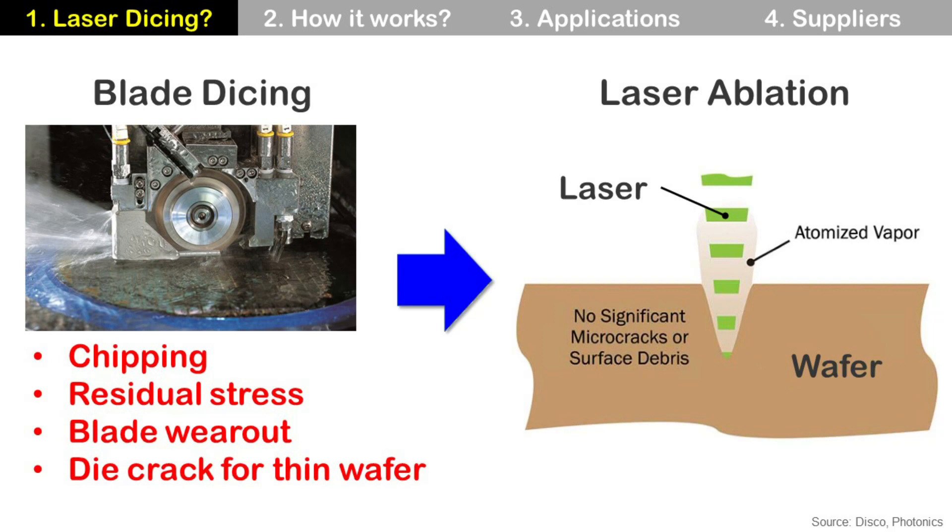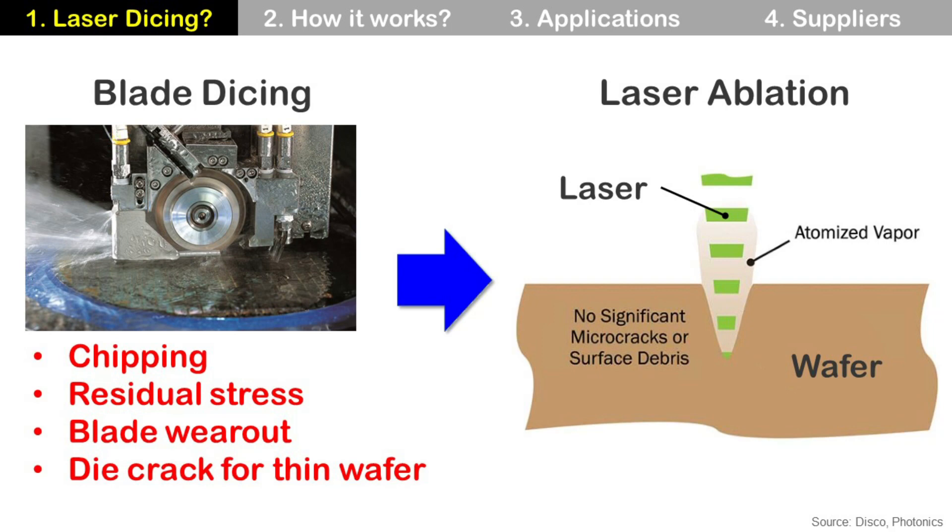So how it works? Here are simplified working mechanisms. Step one: focus laser beam at the surface of wafer. At this time, wafer is still solid state.